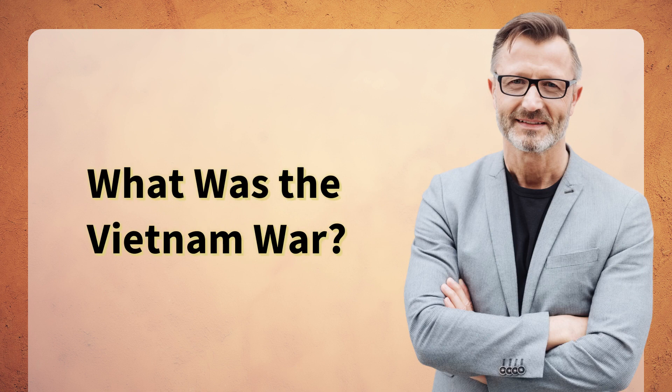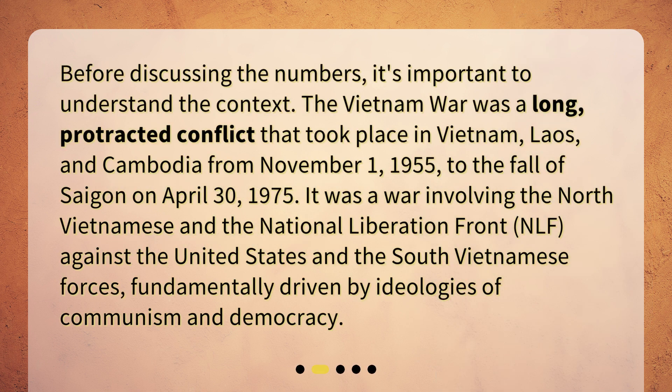What was the Vietnam War? Before discussing the numbers, it's important to understand the context. The Vietnam War was a long, protracted conflict that took place in Vietnam, Laos, and Cambodia from November 1, 1955, to the fall of Saigon on April 30, 1975. It was a war involving the North Vietnamese and the National Liberation Front against the United States and the South Vietnamese forces, fundamentally driven by ideologies of communism and democracy.